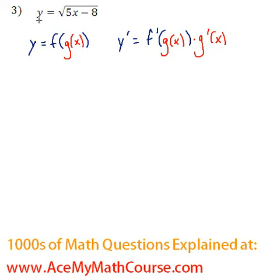Now let's find the derivative of y equals square root of 5x minus 8 and let's recognize the outside function. The outside function would be square root of x and instead of y let me just call it f of x.